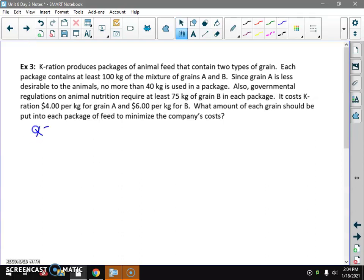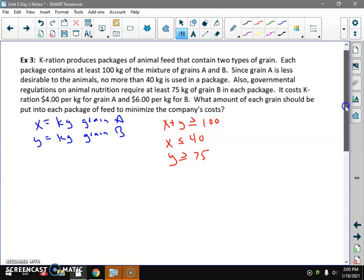Let's get started with our decision variables. X equals kilograms of grain A. Y equals kilograms of grain B. Now let's come up with some inequalities. At least 100 kilograms of the mixture: X plus Y is greater than or equal to 100. Grain A is not desirable, no more than 40: X is less than or equal to 40. Grain B is nutritious: Y is greater than or equal to 75. That looks like a pretty good set of constraints to me.